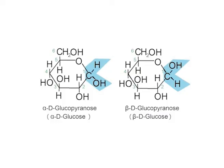In the cyclic forms of sugar, the ring is at right angles to the plane of the paper. The alpha and beta configurations in the Haworth representation depend on the hydroxyl group at carbon number 1, which points below the ring for alpha and above for beta.